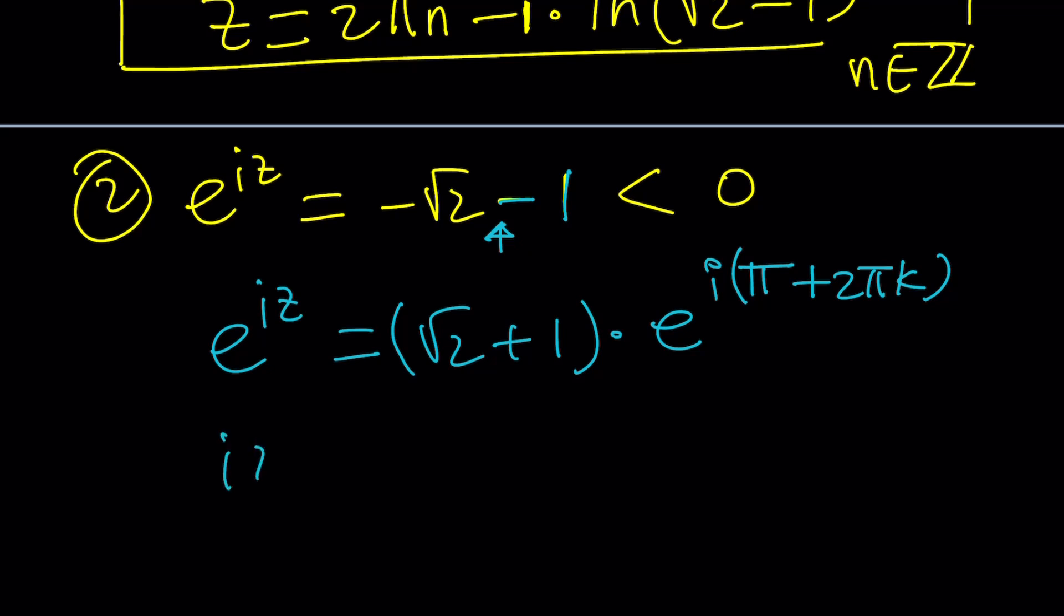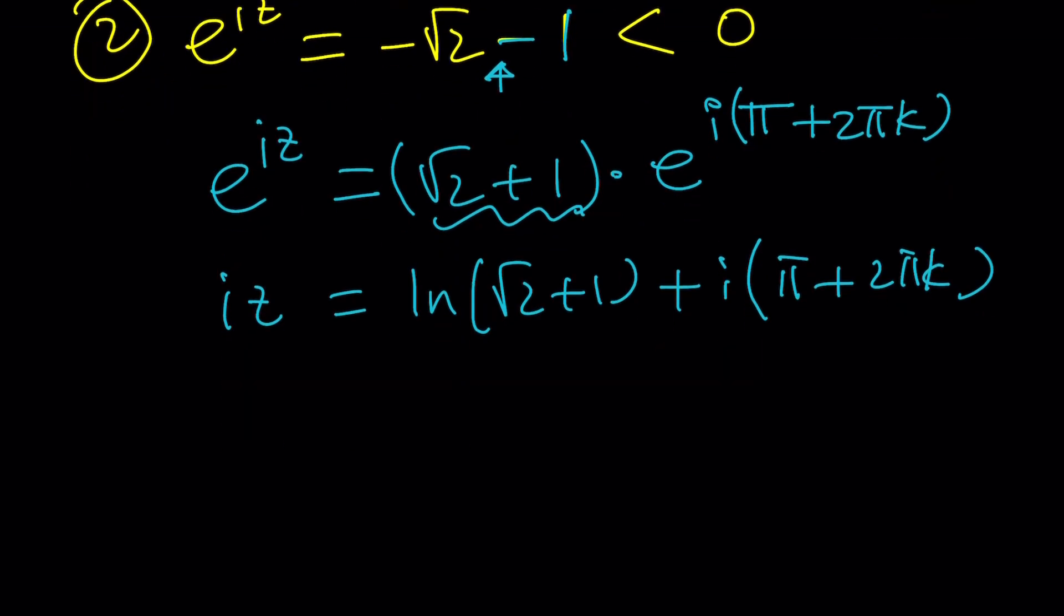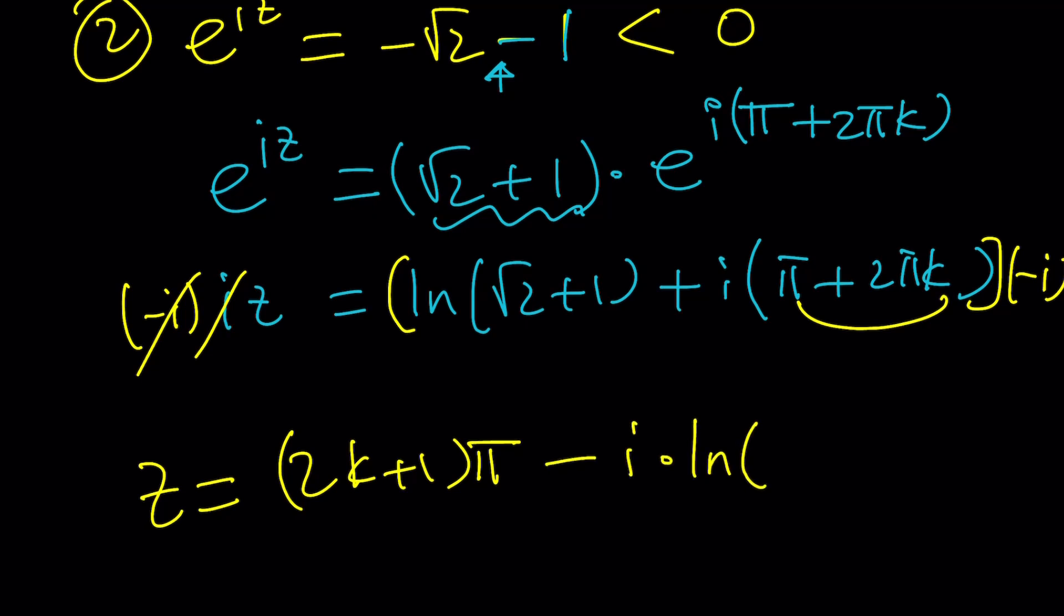Let's go ahead and use the ln. Iz is equal to ln root 2 plus 1, and notice that this is the modulus. So I'm always thinking about a real-valued logarithm. And this is going to be i times pi plus 2 pi k. And I can do a little bit of simplifying here. Of course, I have to multiply by negative i. And then after that, I'm going to be getting the z. And z is going to look like this. I just want to write this as 2k plus 1 multiplied by pi, which emphasizes that we're dealing with odd multiples of pi. Minus i times the ln of root 2 plus 1. And this would be the other solution.